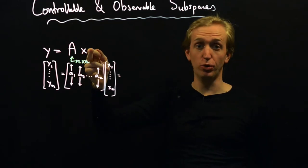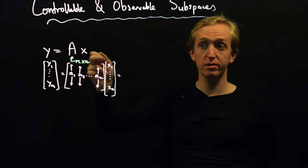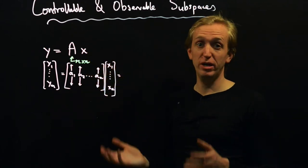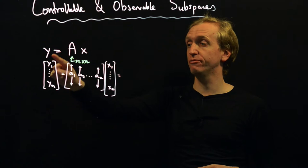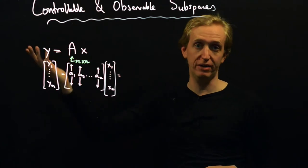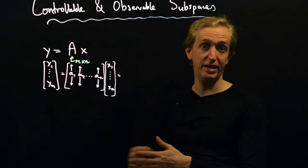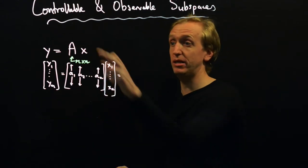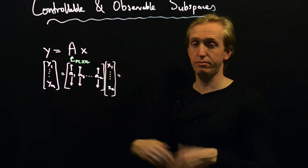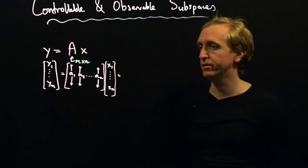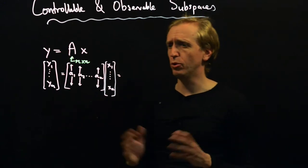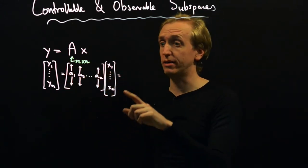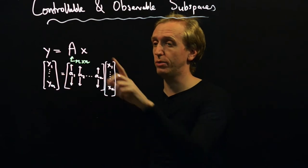Will there only be one solution for X? If there is no solution, can we characterize the sets of vectors Y which will have a solution, or the sets of vectors Y for which there will be no solution? I want to encourage you to start thinking about things a little bit more geometrically — that's what we're going to talk about first.